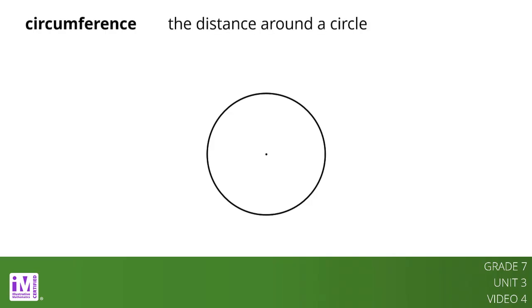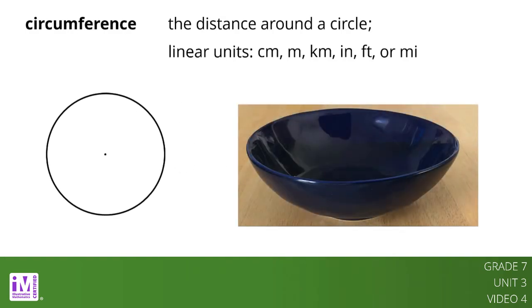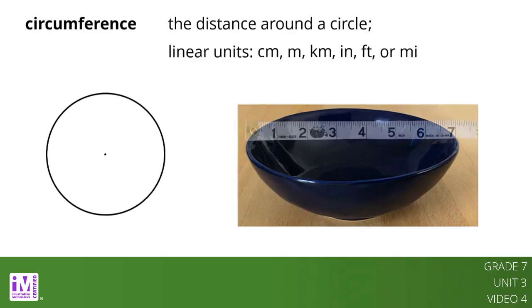Circumference is the distance around a circle. Circumference is a one-dimensional attribute, so we measure circumference using linear units, like centimeters, meters, kilometers, inches, feet, or miles. For example, a bowl with a diameter of 7 inches has a circumference of about 22 inches.